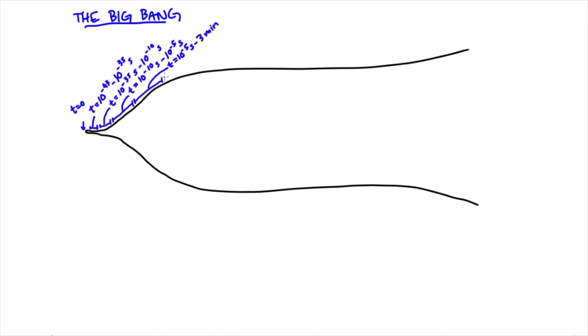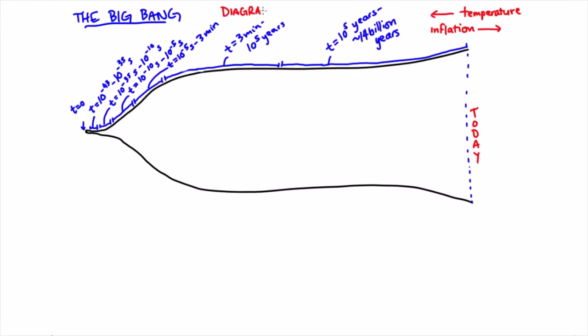On this diagram here, I'm going to go through the different time periods since the Big Bang and what we know about each of them. So as I said, at t equals zero, that's when the Big Bang begins. We don't know why or how.